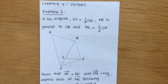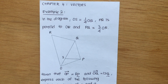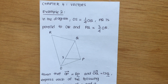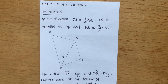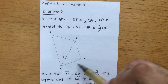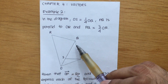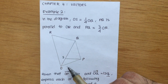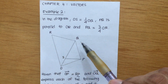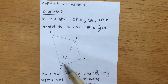Alright guys, without further delay, let's jump to the question now. It's Chapter 4 Vectors, Long Question Example 2. In the diagram, OS is equal to 1 over 4 OQ, PQ is parallel to OR, and PQ is equal to 3 over 4 of OR. As you can see, this diagram is in the form of a trapezium, which is a combination of 3 triangles — one big triangle, one medium-sized triangle, and one small triangle.